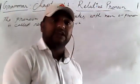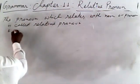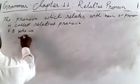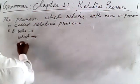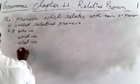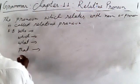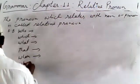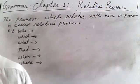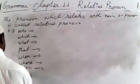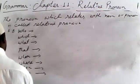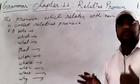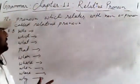The examples we have learned are: who, which, what, that, whom, whose, when, where, and why. These are the examples of relative pronouns learned in chapter number 11. Relative pronouns are pronouns that come after the noun and connect the next sentence.